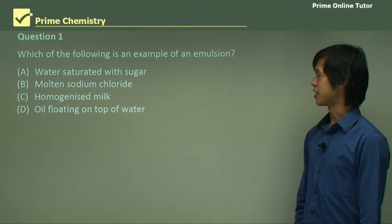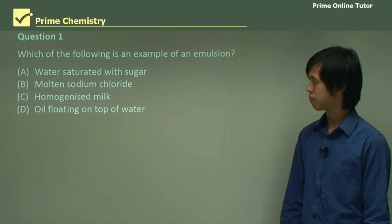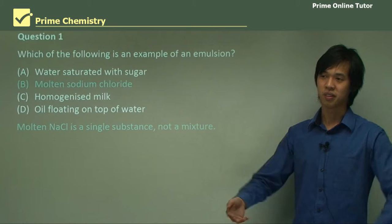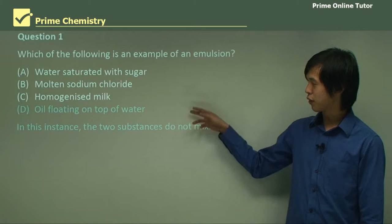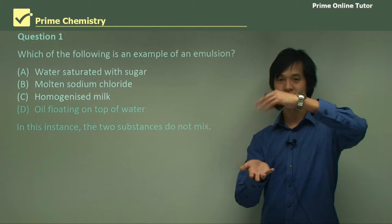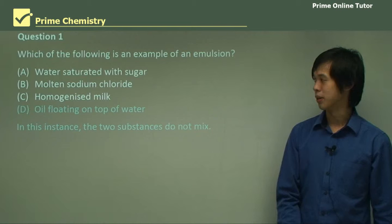Question: which of the following is an example of an emulsion? Molten NaCl is a single substance, not a mixture, so obviously it's not an emulsion — an emulsion requires at least two chemicals. Oil floating on top of water is not an emulsion either, because the two are not forming little droplets — one is simply sitting on top of the other.